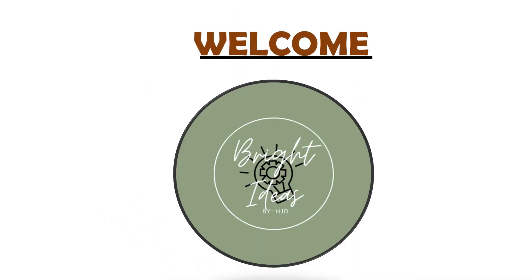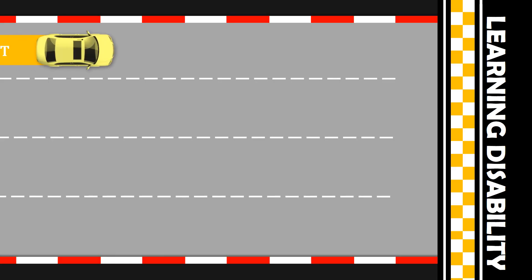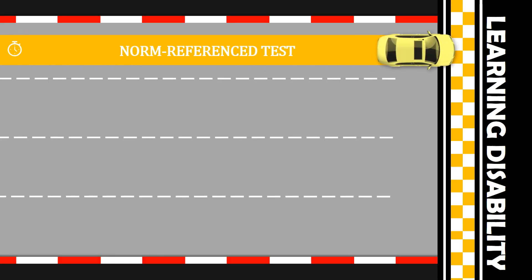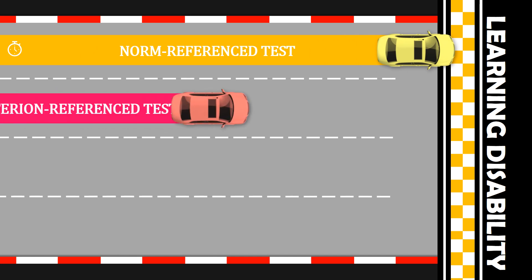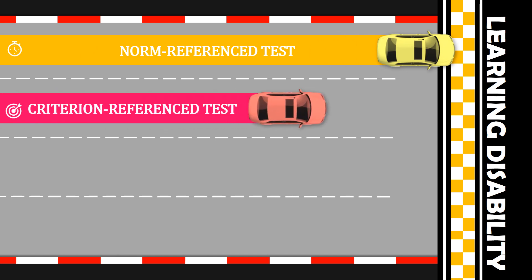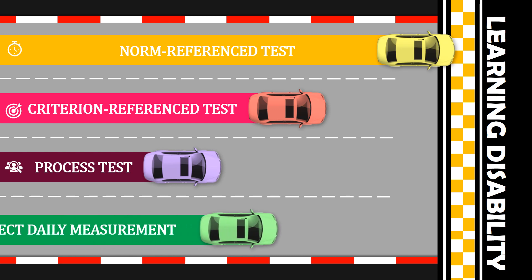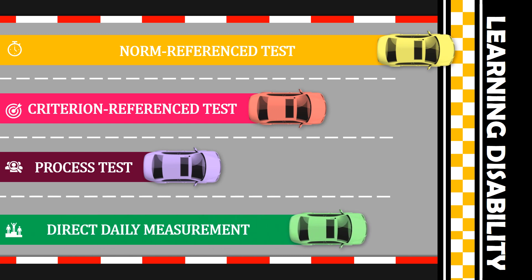Hi, this is Jay. Welcome to Bright Ideas. Here are the assessments of learning disabilities. Number one is norm reference test. Number two is criterion reference test. Number three is process test. And number four is direct daily measurement.